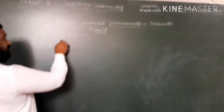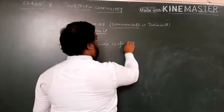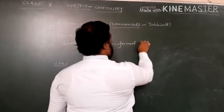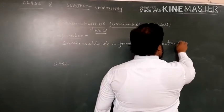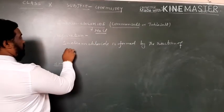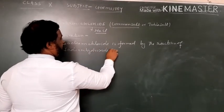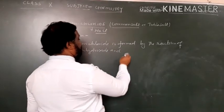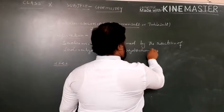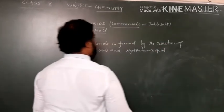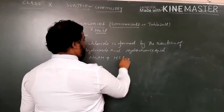Sodium chloride is formed by the reaction of sodium hydroxide and hydrochloric acid. Here, this is sodium hydroxide plus hydrochloric acid.